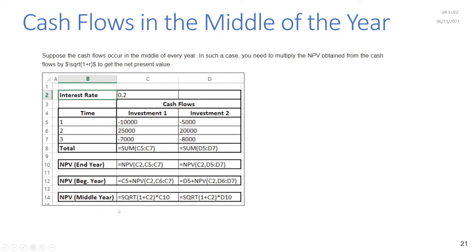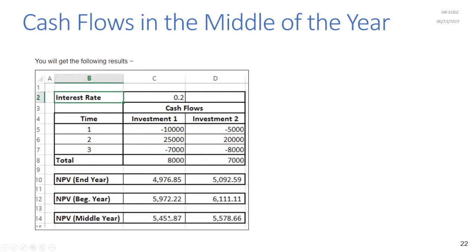If cash flows occur in the middle of every year, multiply the NPV obtained from the cash flows by the square root of (1 + r), where r is the interest rate. So the formula becomes: NPV(cash flows) × SQRT(1 + C2). This adjustment gives the correct net present value when payments are made mid-year.